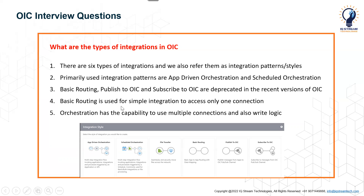Basic Routing is used for simple integrations that access only one connection, whereas orchestration has the capability to use multiple connections and also allows you to write logic — that's why orchestration styles are very popular, and Oracle also recommends using them wherever required.